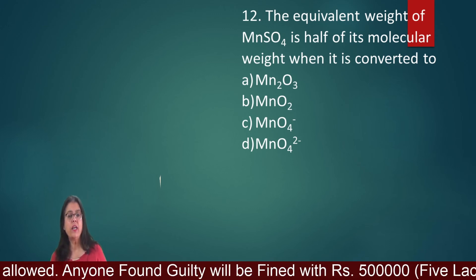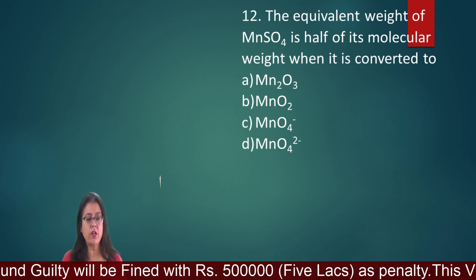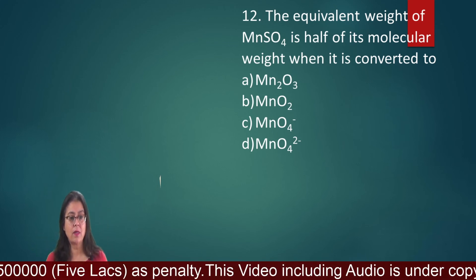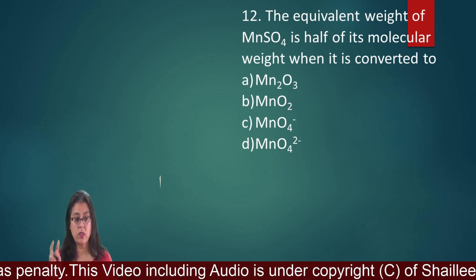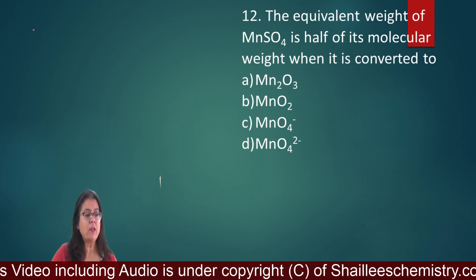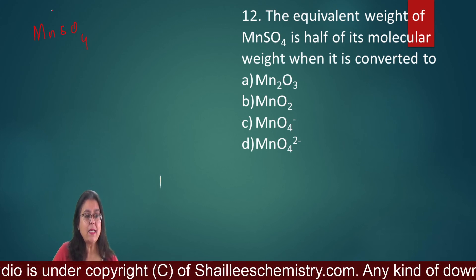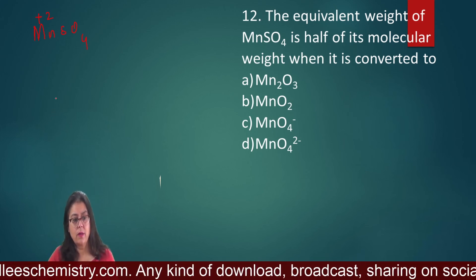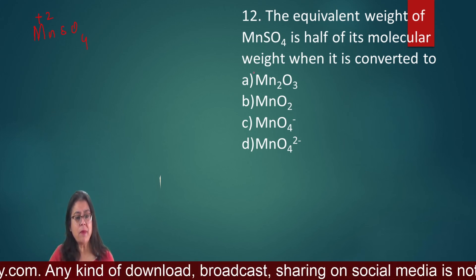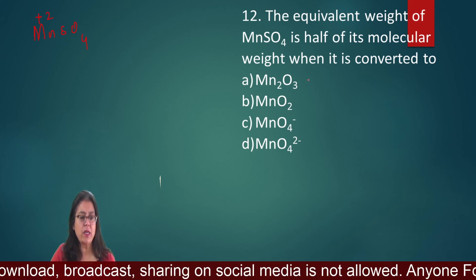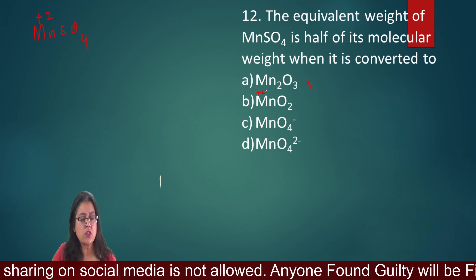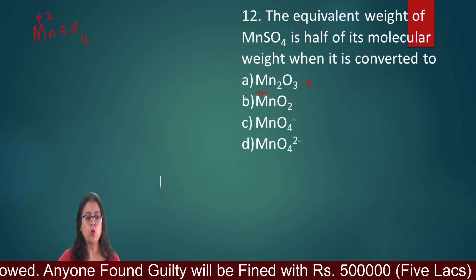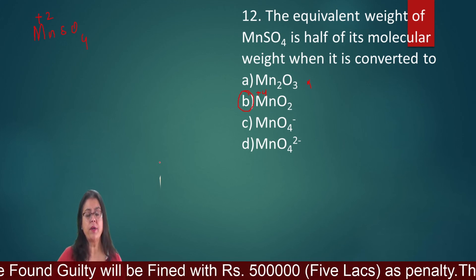Question number 12: The equivalent weight of MnSO₄ is half of its molecular weight when it is converted to what? Half molecular weight means the N factor (electron exchange) must be 2. In MnSO₄, manganese has an oxidation state of +2. We need to find a product where Mn has oxidation state +4. That is MnO₂, where the electron exchange is 2. So the correct option is MnO₂.